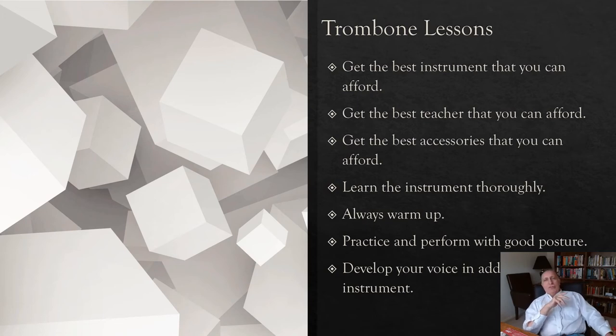And sometimes in high school, you might want to get the professional level, like the Conn 88H, the King 3B or something like that, to go on if you're intending on going on throughout your life. The professional instruments usually have a better metal alloy brass. They usually have a superior workmanship. And they're usually the classic ones that you hear on the recordings and in the orchestras. And they usually get the best sound.